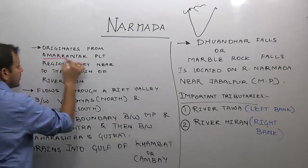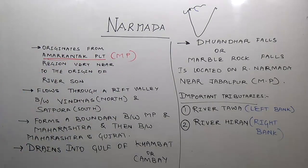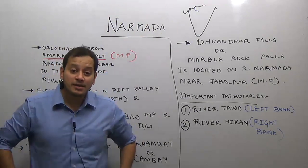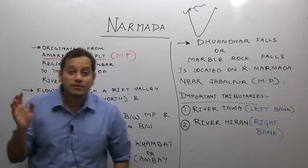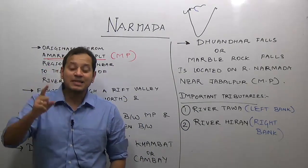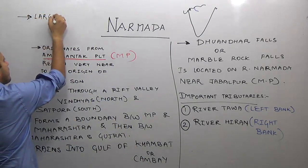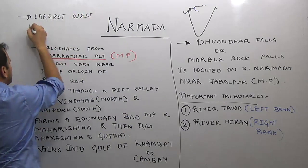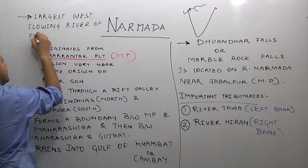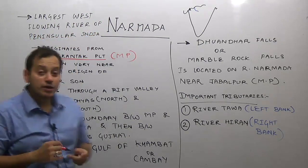River Narmada originates from the Amarkandak Plateau region, very near to the origin of river Son. The Amarkandak Plateau acts as a water divide: river Son is part of the Ganga river system draining into the Bay of Bengal, while river Narmada is part of the Arabian Sea drainage system. Narmada is the largest west-flowing river of peninsular India.